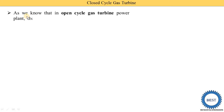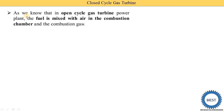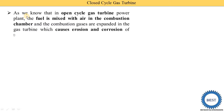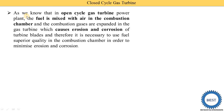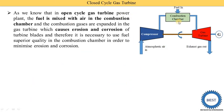In open cycle gas turbine power plant, the fuel is mixed with the air in the combustion chamber. Air coming from the compressor is supplied to the combustion chamber, and in the combustion chamber this air is used to burn the fuel. The air and fuel are mixed in the combustion chamber, and the combustion gases produced are supplied to the gas turbine. These combustion gases cause erosion and corrosion of the turbine blades.